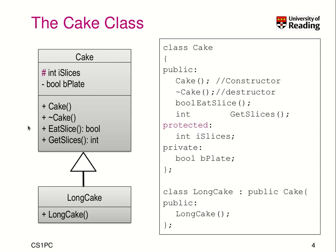Let's go back to our cake class. On the left-hand side, we saw that we can have a UML representation — a UML class diagram — that can be very easily mapped directly to a C++ header file. Here we see a cake, and in the UML we have the visibility, indicated by hash, minus, and plus. Public, indicated by plus, means accessible by anyone trying to use a cake object. We place here the functions, and when we talk about functions in C++, they are actually called methods or member functions because they are tied to an instance of the class cake.